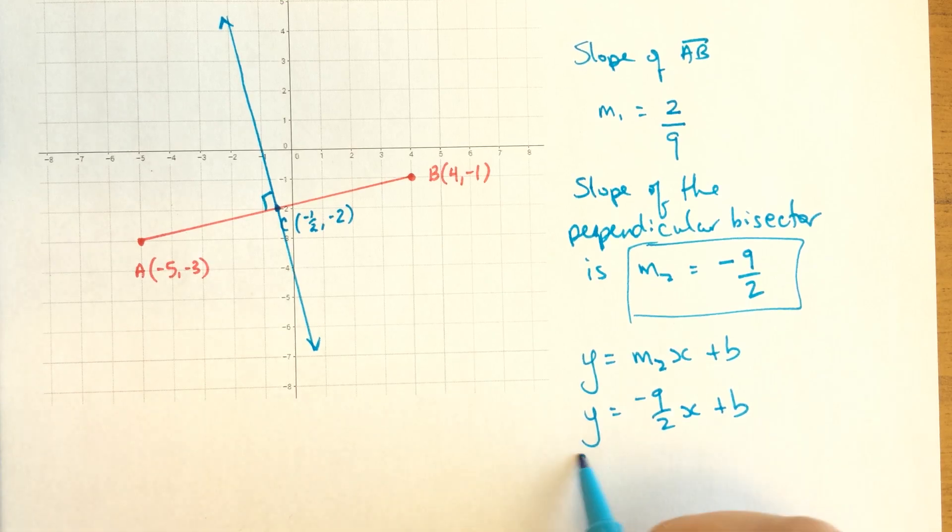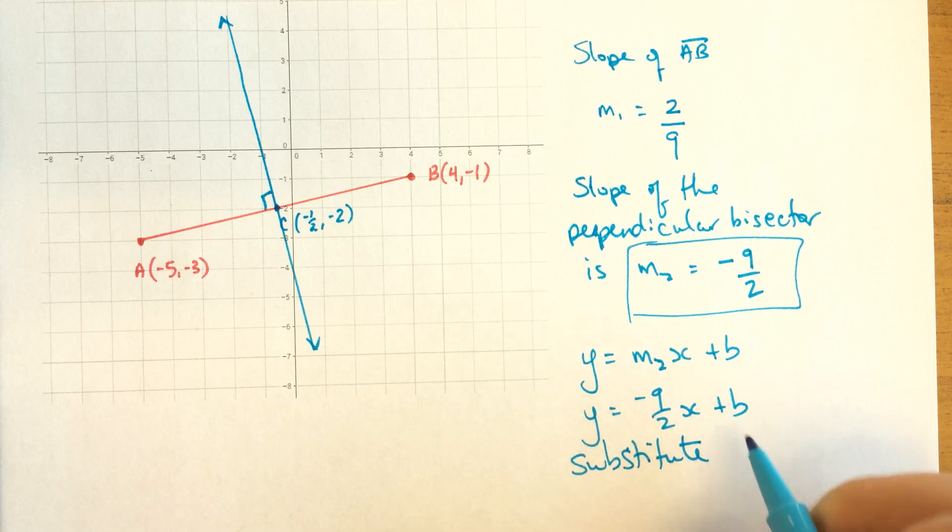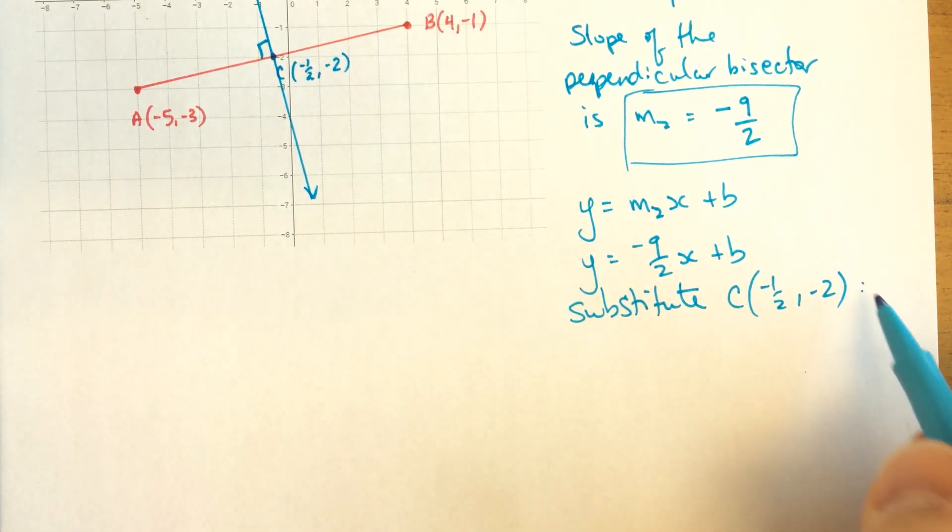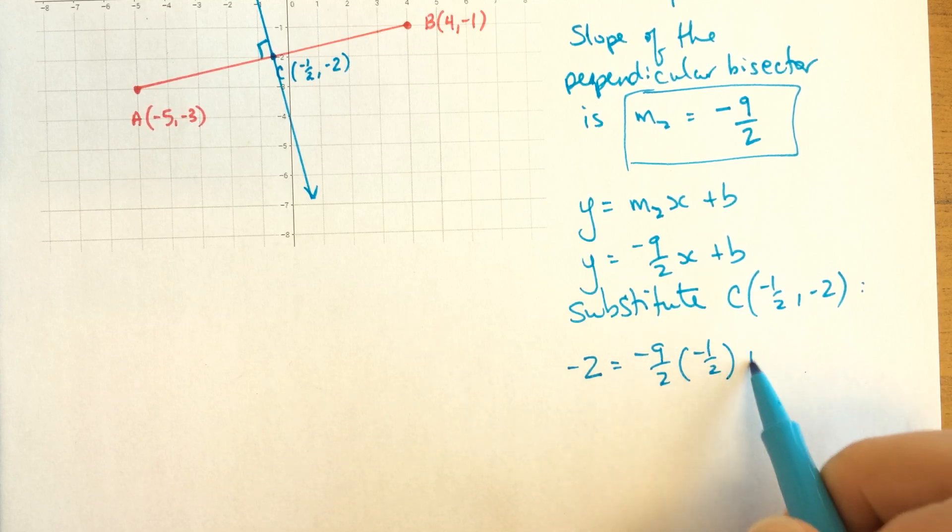There's our slope. And now substitute the point that we know, which is C, the midpoint. Negative one-half and negative two. The Y value is negative two. That goes here. And the X value is negative one-half. That goes here.